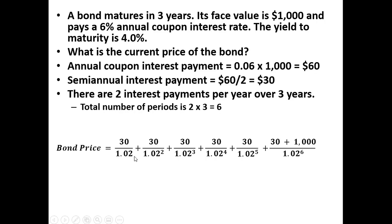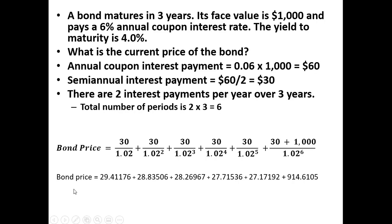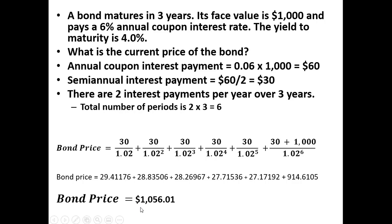That denominator applies at the end of the first period, the second period, the third, fourth, fifth, and finally at the end of three years — the sixth period. If you were to put these values in a calculator or Excel, 30 divided by 1.02 is 29.41, 30 divided by 1.02 squared is 28.84, and so on. Adding all those discounted payments up, we get a bond price of $1,056.01.